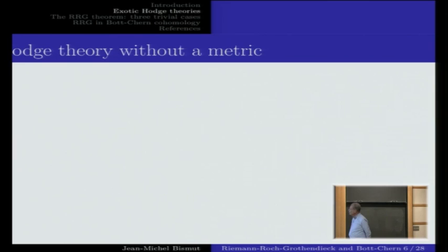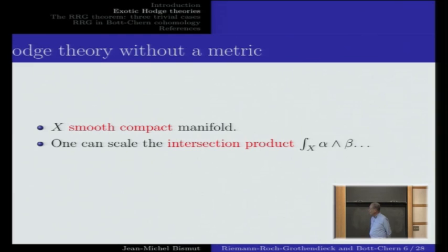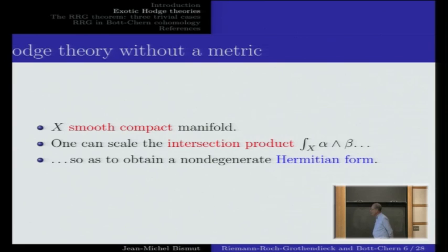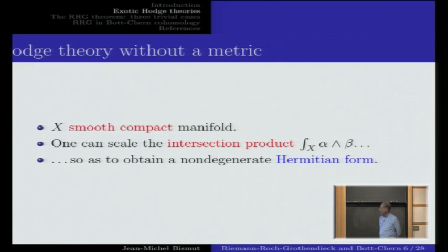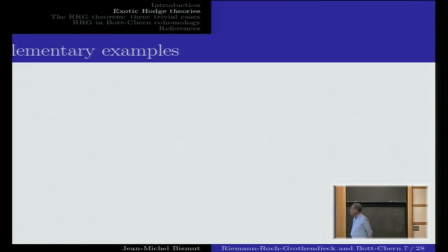Now, exotic Hodge theories. I will explain first a Hodge theory without a metric. Let X be a smooth compact manifold. I claim that it is possible to scale the intersection product on smooth differential forms — by proper powers of i or minus 1 depending on degree — so as to obtain a non-degenerate Hermitian form. The intersection product on forms is neither symmetric nor anti-symmetric; symmetry depends on the degree. But there is a canonical way to scale it to obtain a non-degenerate Hermitian form.